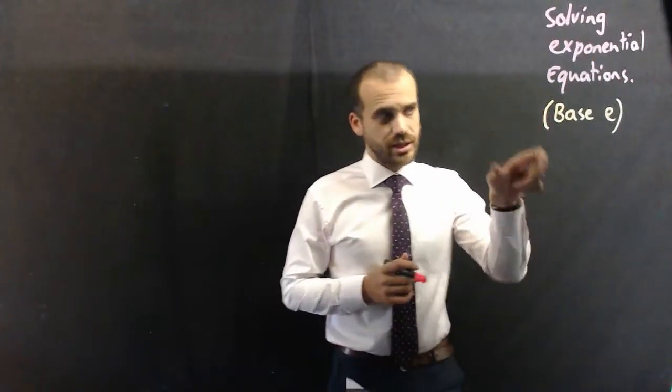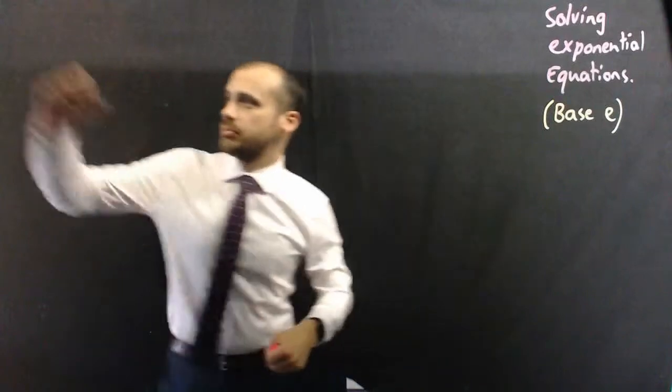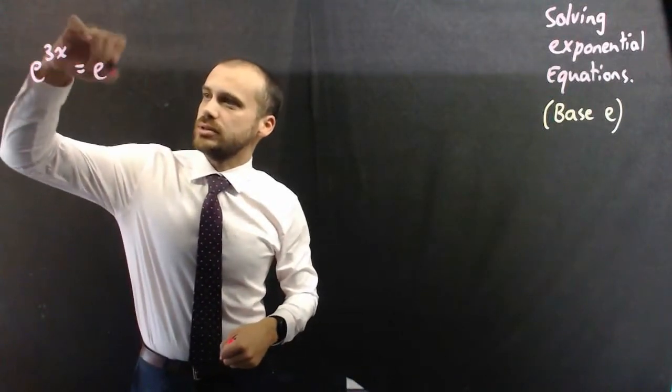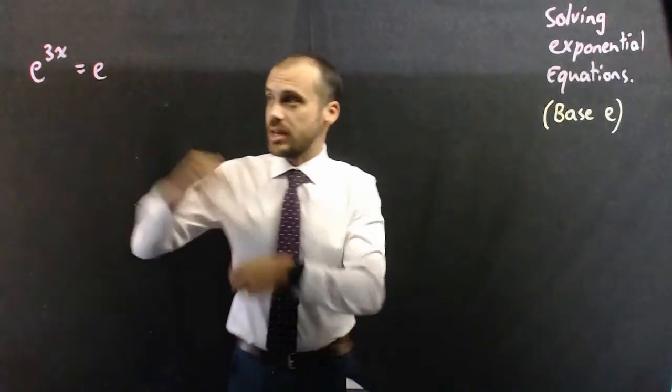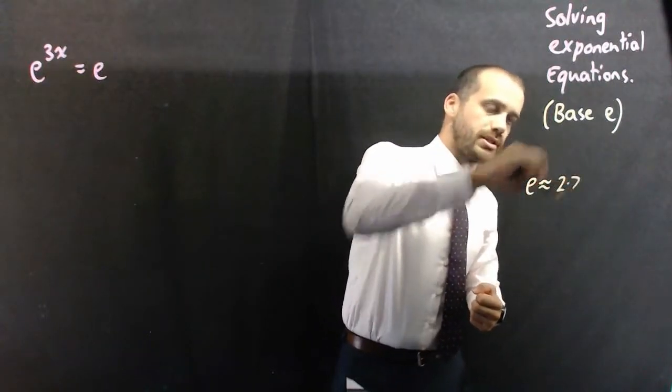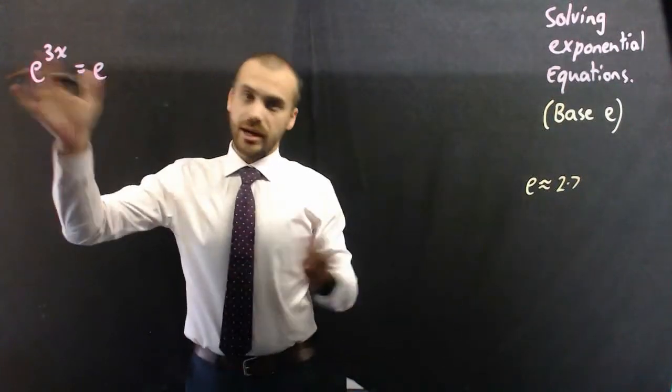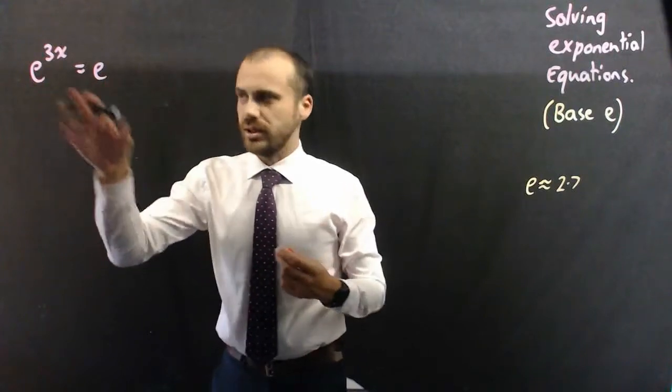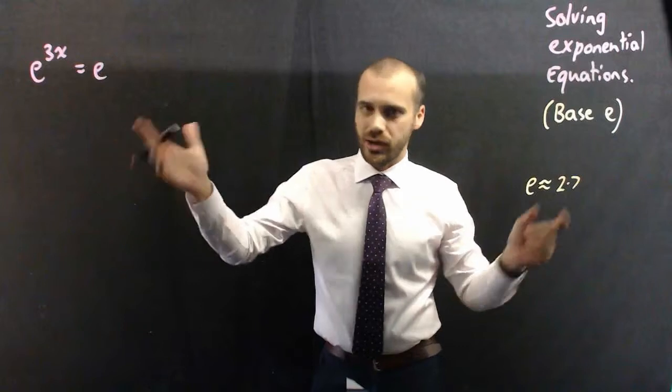We're solving exponential equations here, this time with base e. So an exponential equation might be e to the 3x equals e. Now, a reminder that the letter e is actually a number. e is approximately 2.7 something something something. So just bear that in mind, this is a number to the power of 3x equals a number. So it's not a variable, it's not like x or y, it is an actual number. It's like writing pi or something like that.